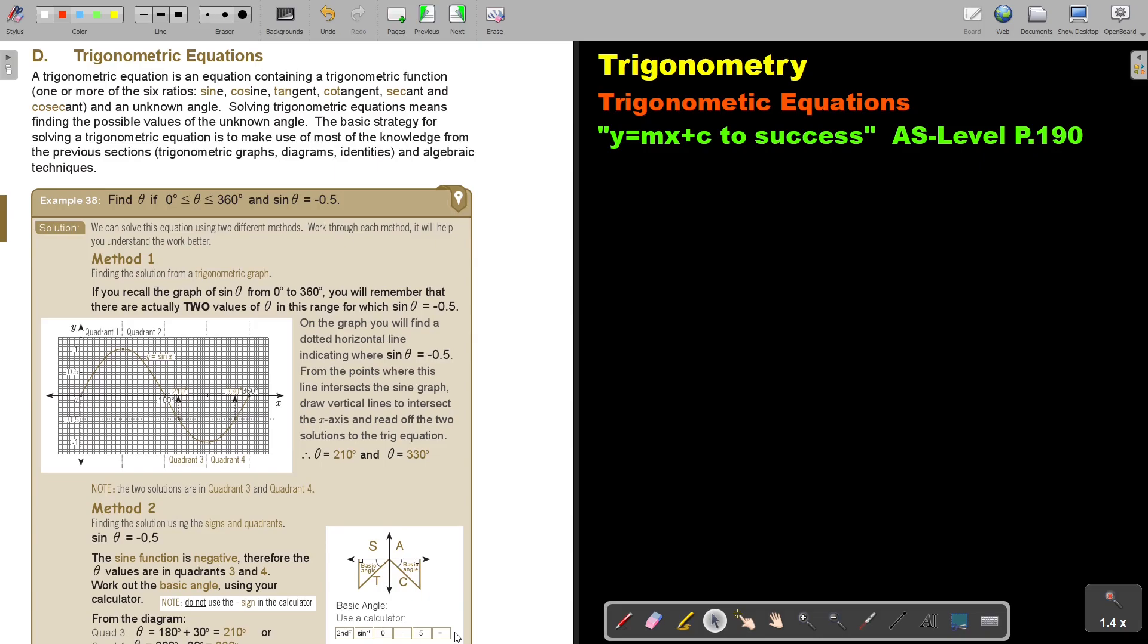Usually we use abbreviations: sin, cos, tan, cot, sec, cosec. Solving trigonometric equations means finding the possible values of the unknown angle. The basic strategy is to make use of knowledge from previous sections: graphs, diagrams, identities, and algebraic techniques.